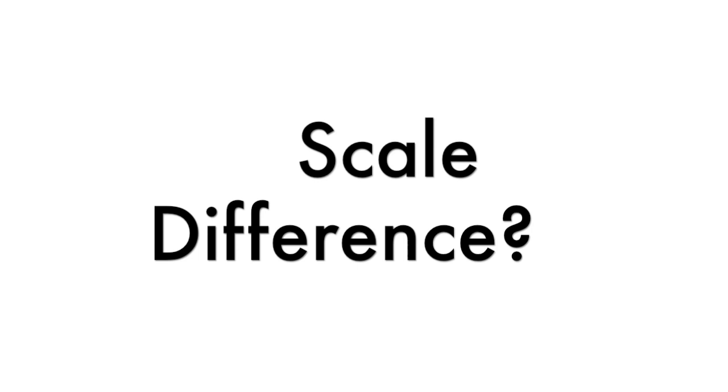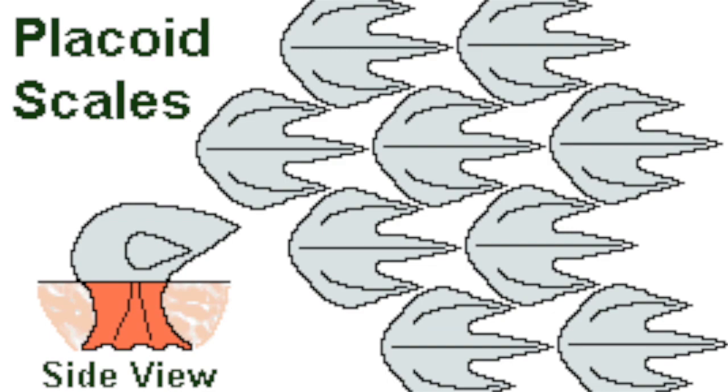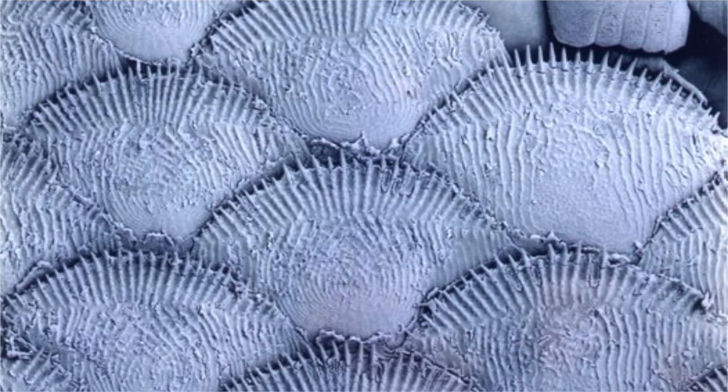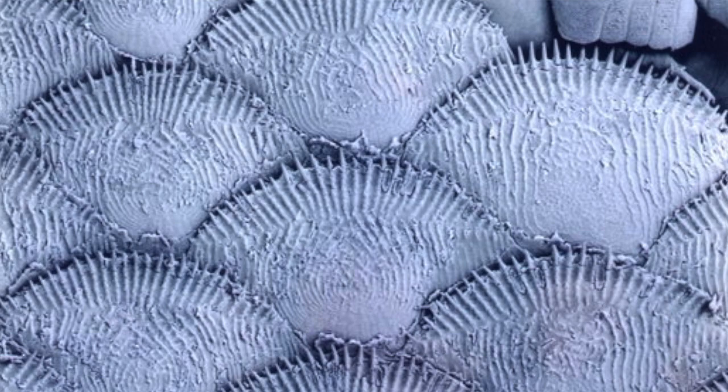Another difference in their body plan includes their scales. Cartilaginous fish, also known as Chondrichthyes, have placoid scales, meaning tiny, rough scales are part of their integumentary system, which is their skin. Class Osteichthyes actually have scales called cycloid and ctenoid, which are much more thin and translucent, and are on the outer layer.